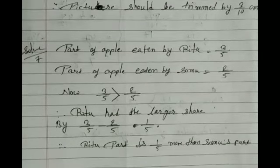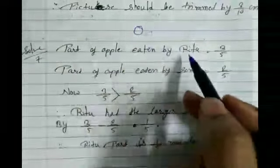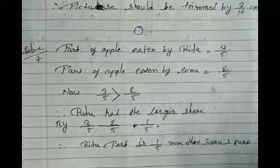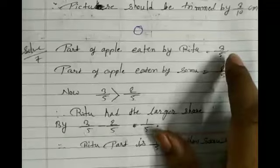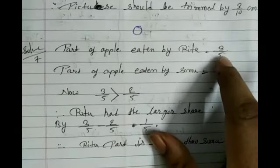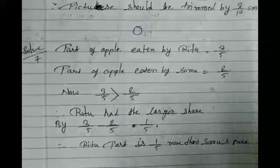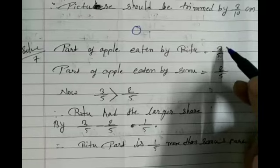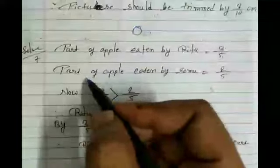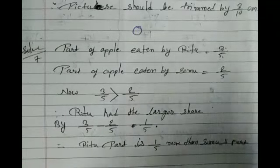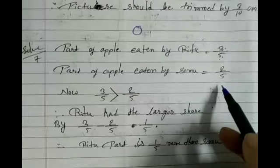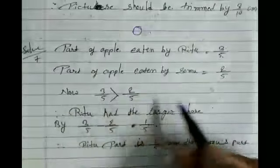Now see question number 7. Out of a whole apple, Ritu eats 3/5 part, meaning out of 5 parts Ritu eats 3 parts. The remaining part is 2, so Somu eats 2/5 of the apple. Comparing: Ritu's part is 3/5 and Somu's part is 2/5, so Ritu ate the larger share.